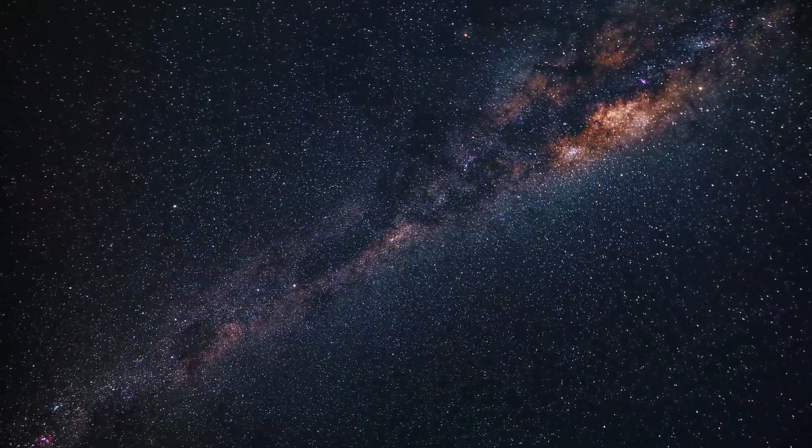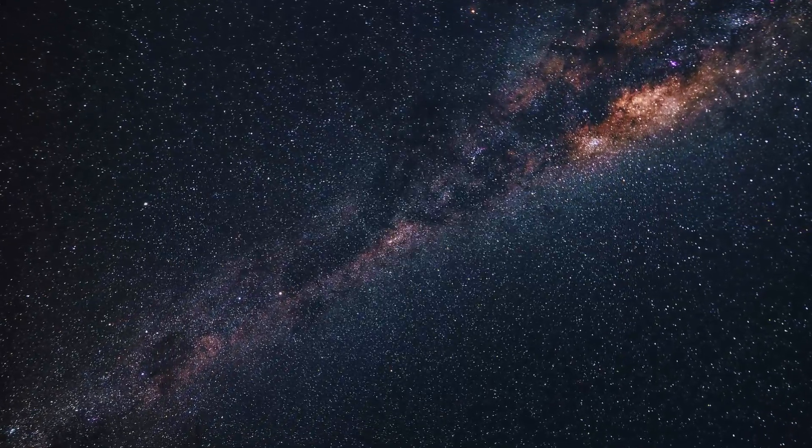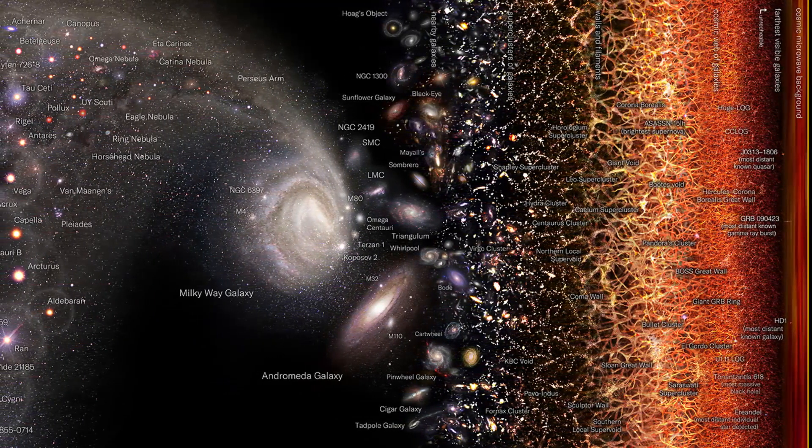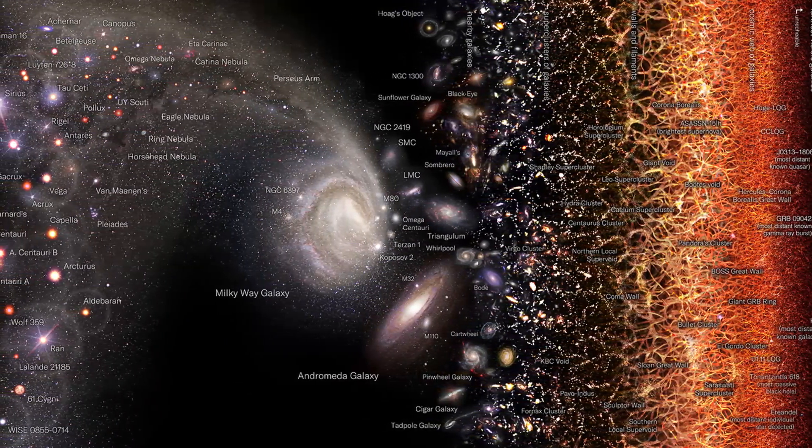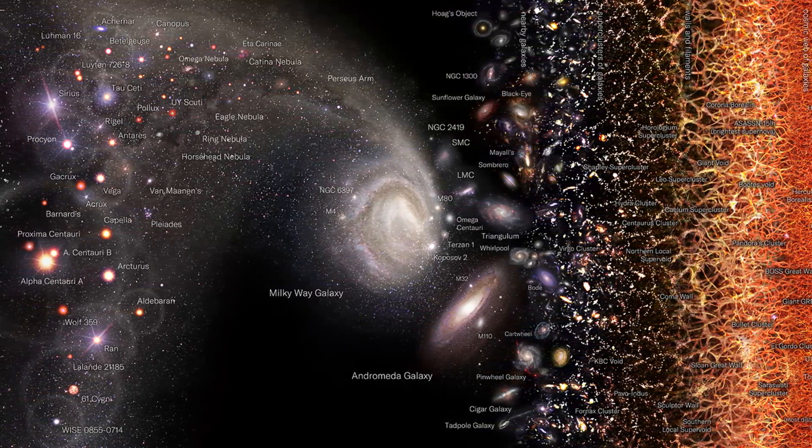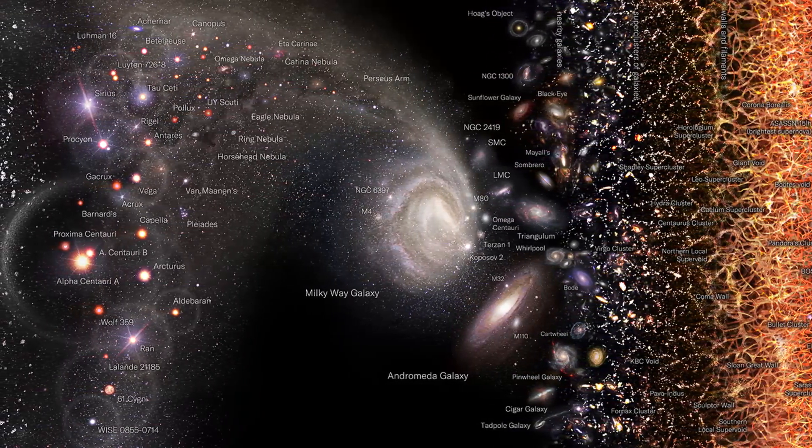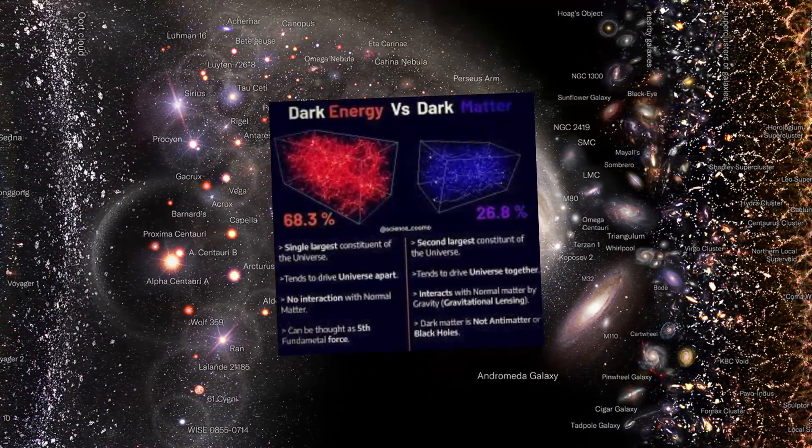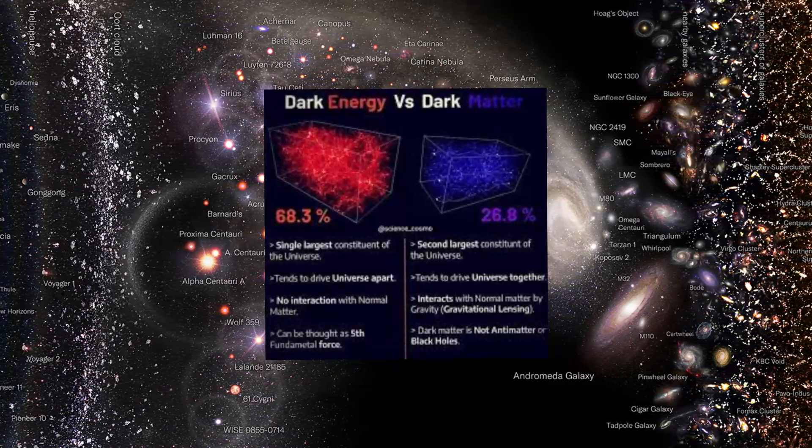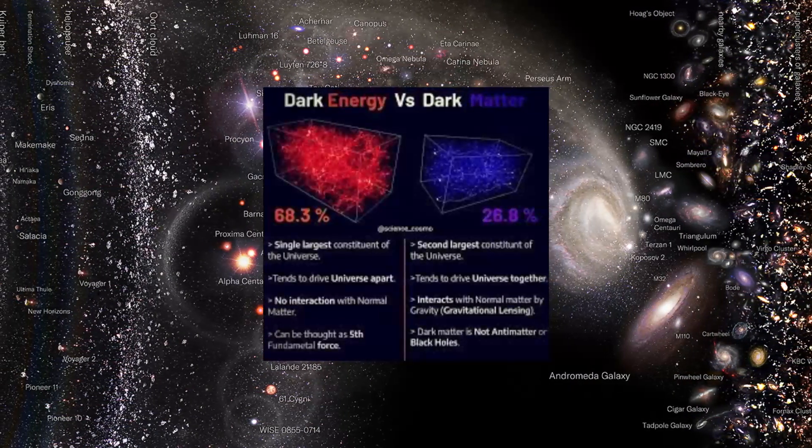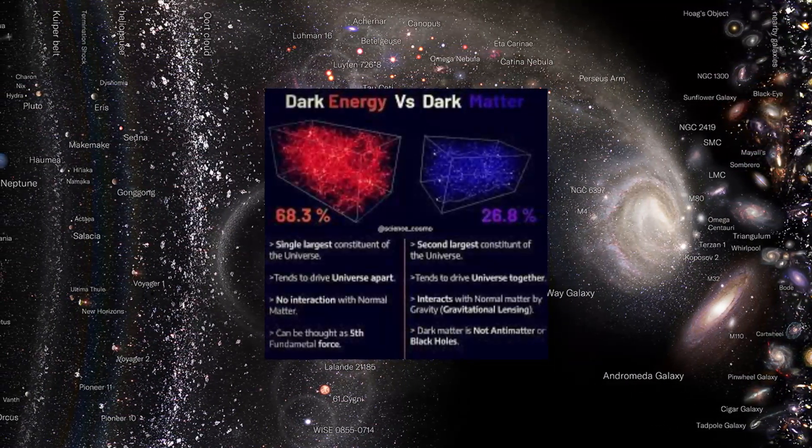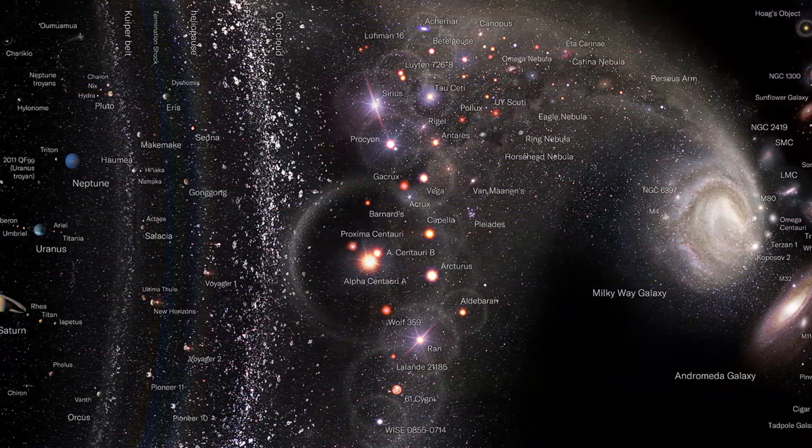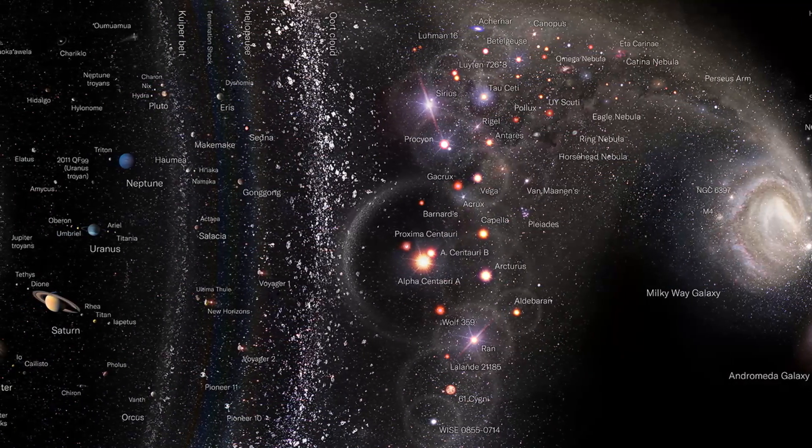Another scientific proof comes from the detailed analysis of the cosmic microwave background radiation, which is a relic of the Big Bang, one of the theories about the beginning of the universe. This radiation provides valuable information about the composition and evolution of the universe. Studies of the cosmic microwave background radiation have revealed that dark energy makes up approximately 68% of the total energy of the universe, while dark matter comprises about 27%, with only 5% remaining for visible matter. These results indicate that dark energy is the main driving force behind cosmic expansion.